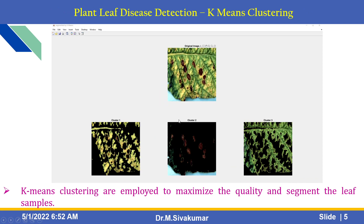The k-means clustering is employed to maximize the quality and segment the leaf samples in the form of clusters. This is the input original image. This shows cluster 1, cluster 2, and cluster 3. I need to select cluster 2 because those are the affected areas, so I am selecting this cluster 2 image part.